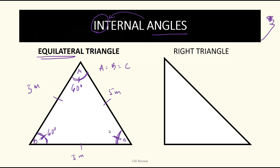So what does that mean? Ang sum ng internal angles, ang sum, or ito yung symbol natin for sum, sum ng internal angles ng equilateral triangle ay 60 plus 60 plus 60 or 180 degrees.